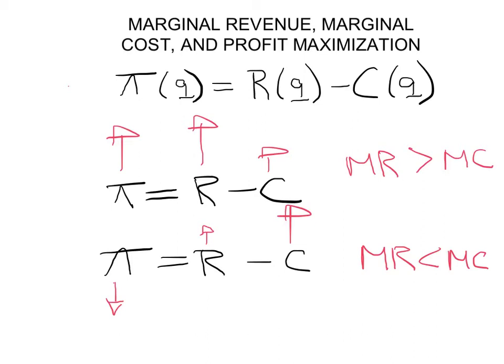Clearly, if you get rid of that unit you will actually increase your profits. The point at which you know you're doing the best is when these two things are the same — when marginal revenue equals marginal cost, your profits are at maximum. If marginal revenue is larger than marginal cost, produce more. If marginal revenue is less than marginal cost, get rid of some units. You know you're doing the best when marginal revenue equals marginal cost.